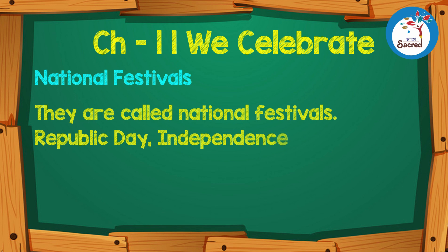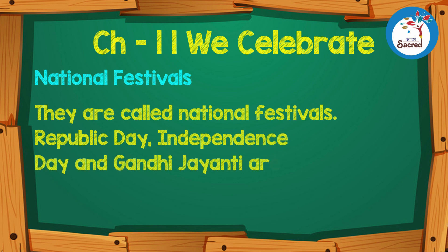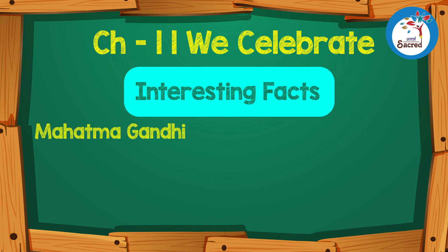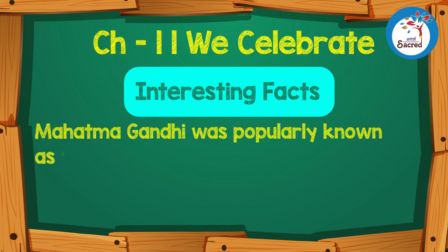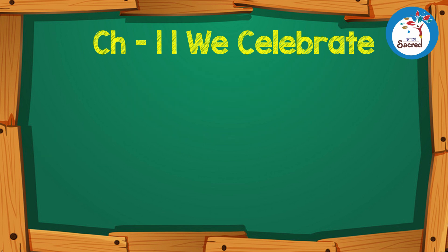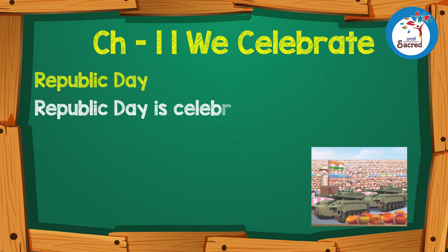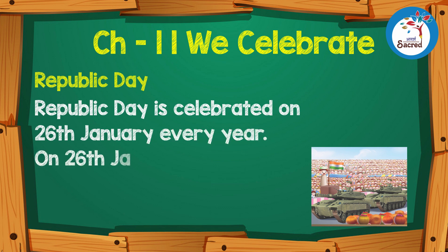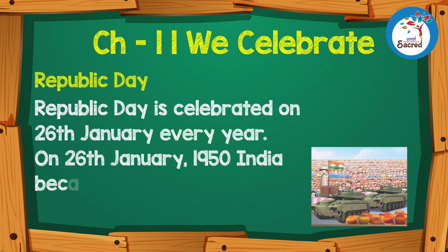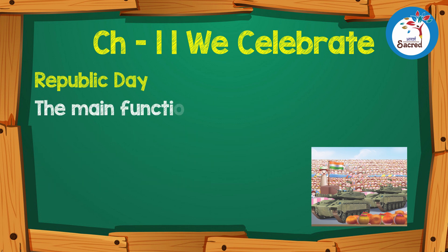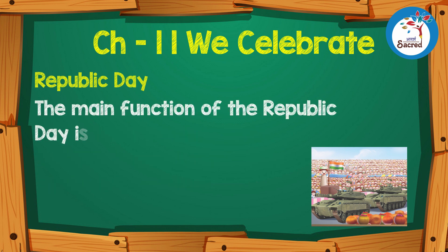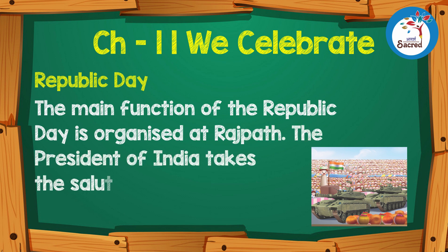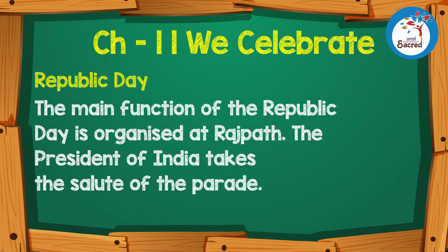Republic Day, Independence Day, and Gandhi Jayanti are our national festivals. Interesting fact: Mahatma Gandhi was popularly known as Bapu. Republic Day is celebrated on 26 January every year. On 26 January 1950, India became a republic. The main function of Republic Day is organized at Rajpath, where the President of India takes the salute of the parade.